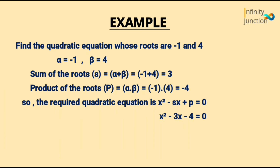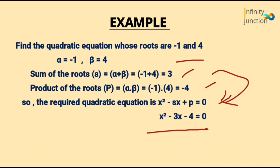Let's see an example. Find the quadratic equation whose roots are minus 1 and 4. Let one root be alpha and the other be beta. The sum of roots, alpha plus beta, equals 3, and the product of roots, alpha times beta, equals minus 4. The required quadratic equation is x² minus Sx plus P equals to 0. Substituting, you get x² minus 3x minus 4 equals to 0. This is how you find the quadratic equation when roots are given.